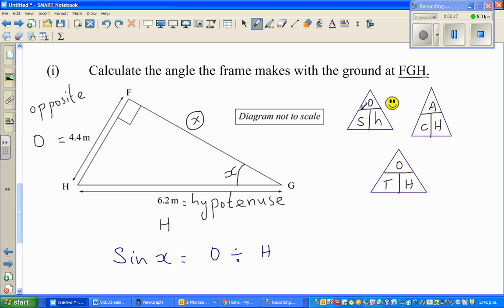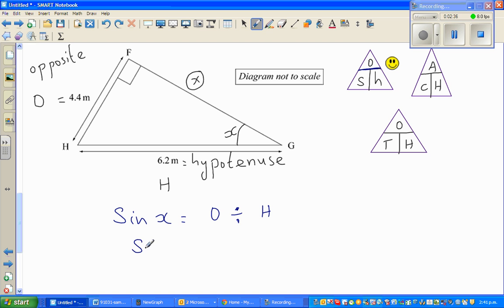This line is a division line. So I can say SIN of X, or SIN X, is opposite, which is 4.4, divided by 6.2.